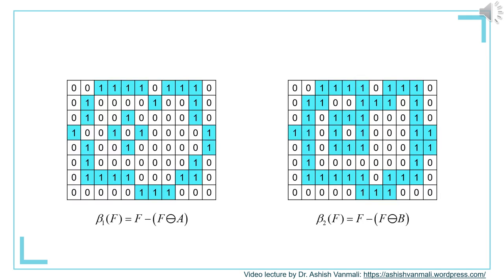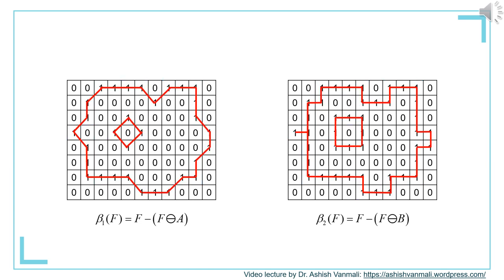Here we compare the boundaries extracted by structuring element A and structuring element B. The first figure shows the boundary by A and the second figure shows the boundary by B, with boundaries highlighted in blue. Connecting these boundary points with a red line reveals the boundary path for each. Carefully observing, when you extract the boundary using structuring element A, it allows you to take a diagonal path. Whereas structuring element B does not allow a diagonal path — the boundary extracted by B always follows a 4-neighbor path.